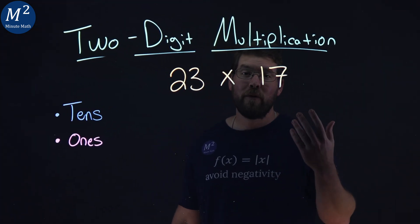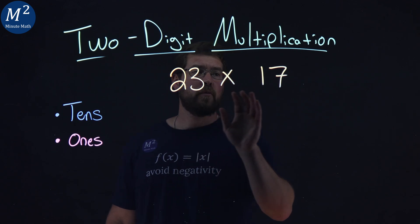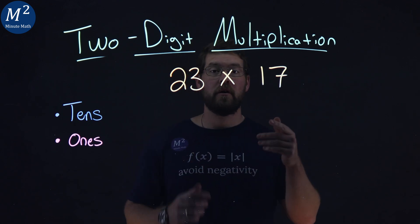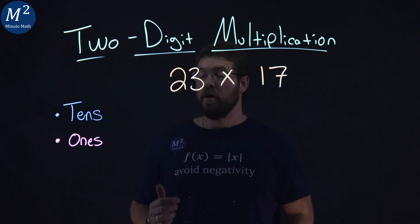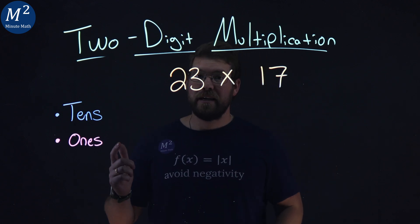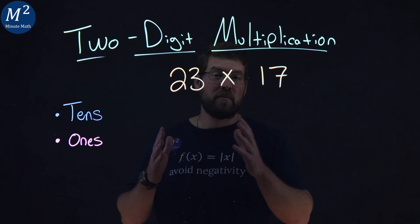When we multiply, we're finding the total of repeated groups. In this case, 23 times 17 is 23 groups of 17. Now, we can break down each number into its parts, its tens and ones. This makes the multiplication easier and the process more straightforward.